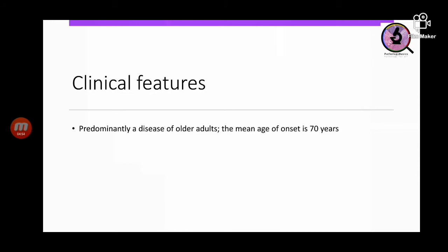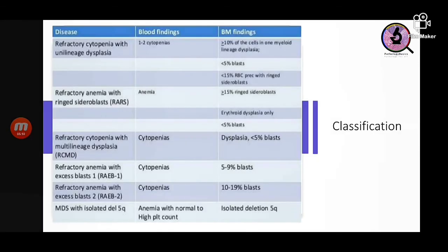MDS is a specific disorder where it is often discovered incidentally on routine blood testing — many patients have no specific symptoms. MDS is classified on the basis of which cell shows cytopenia in the peripheral blood. WHO categories include: refractory cytopenia with unilineage dysplasia, meaning dysplasia of one cell line — either erythroid, platelets, or granulocytes.